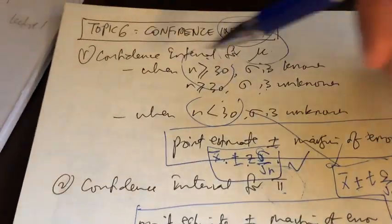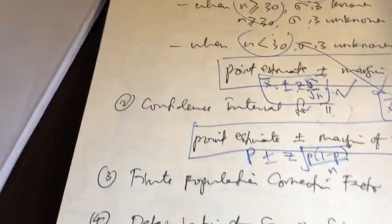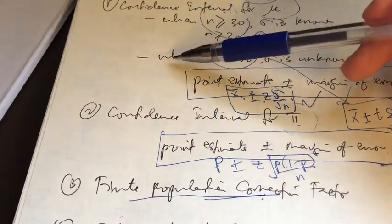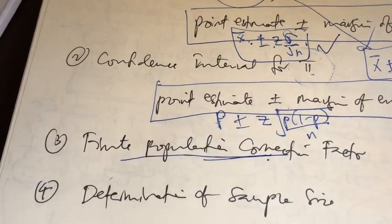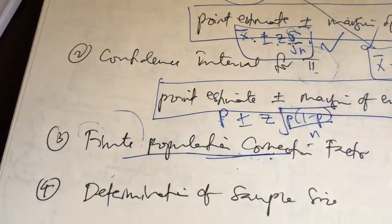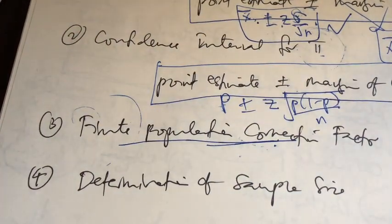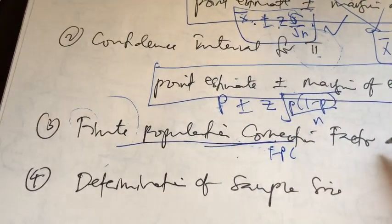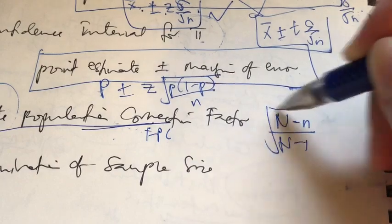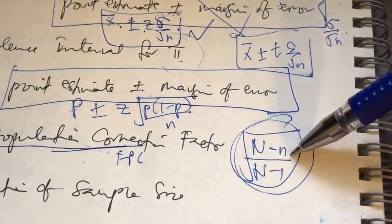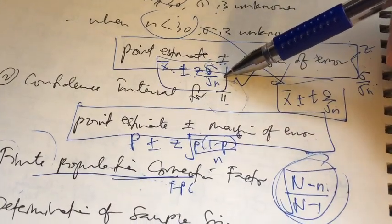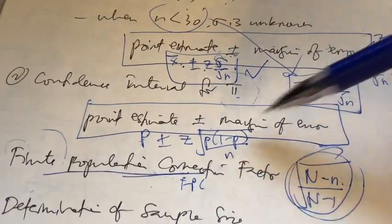We learned the confidence interval for mu, the confidence interval for pi, and the third application: the finite population correction factor (FPC). The difference is that in the previous two cases we don't know the population size — it was assumed infinite. But sometimes you are given the population size. When that happens, we apply the FPC, which equals the square root of (N minus n) over (N minus 1). We attach this FPC to the standard error component of the original formula.